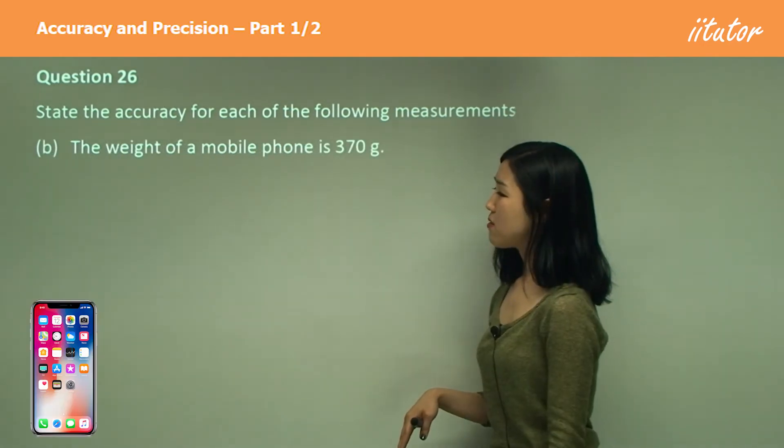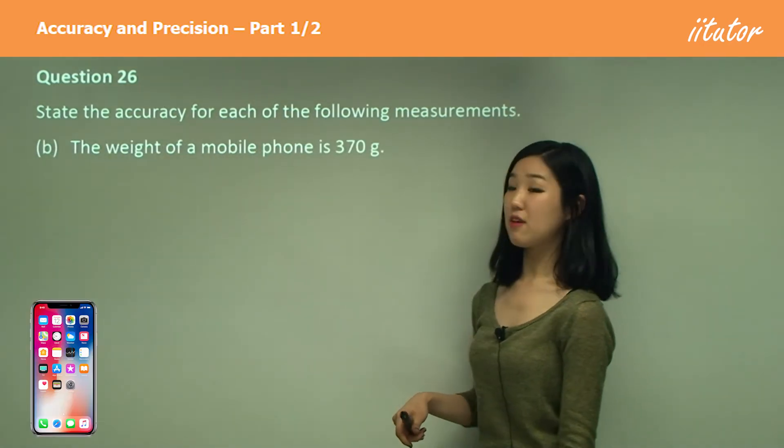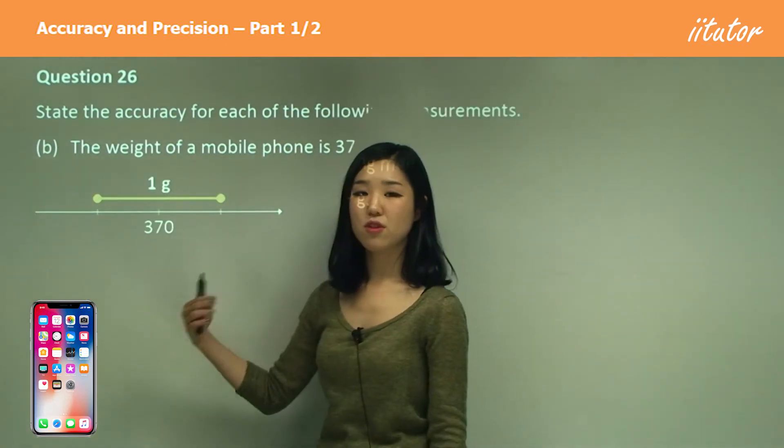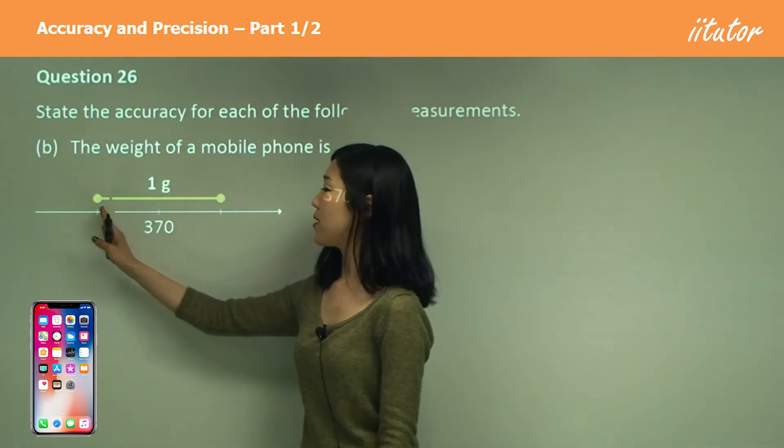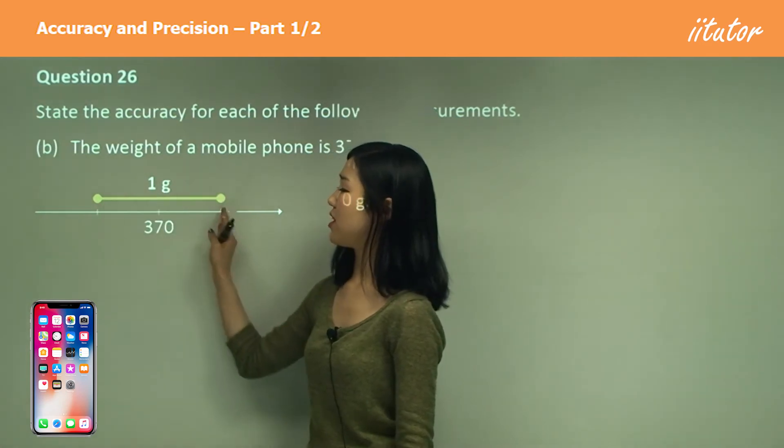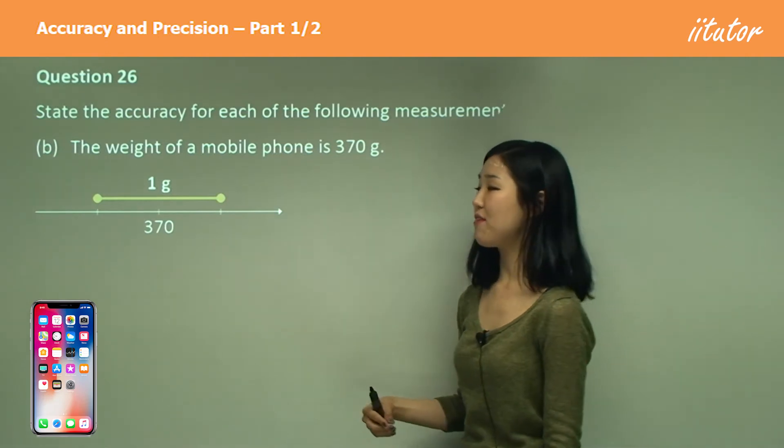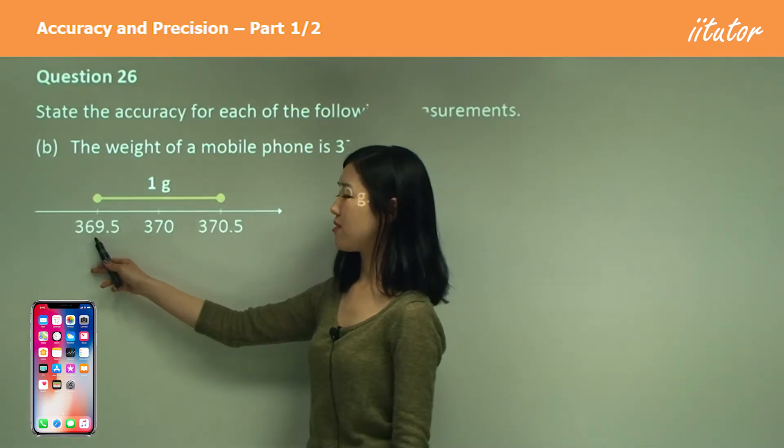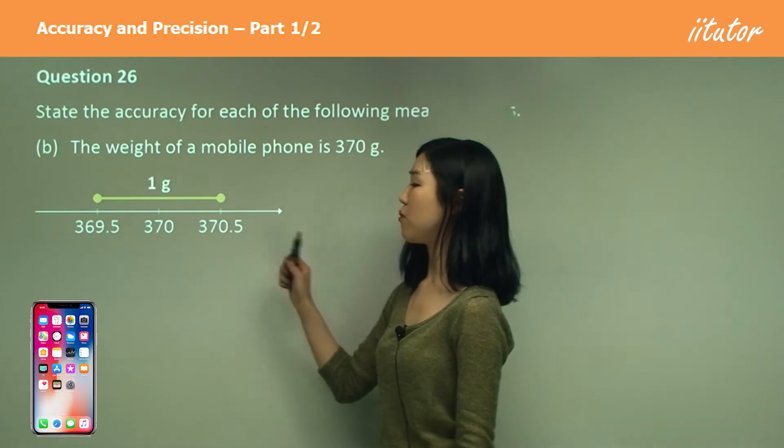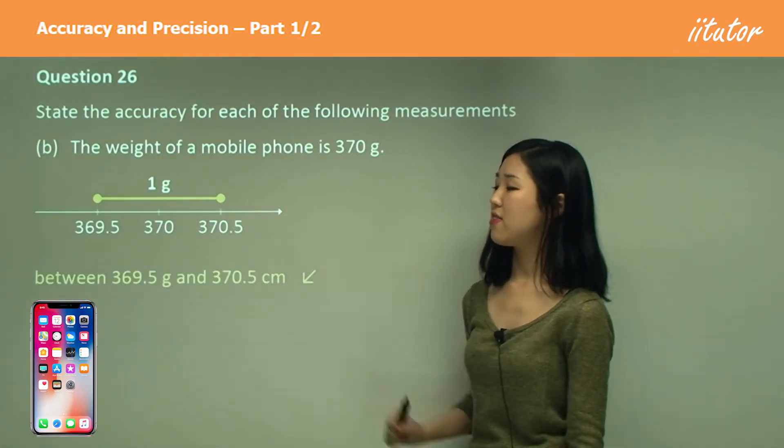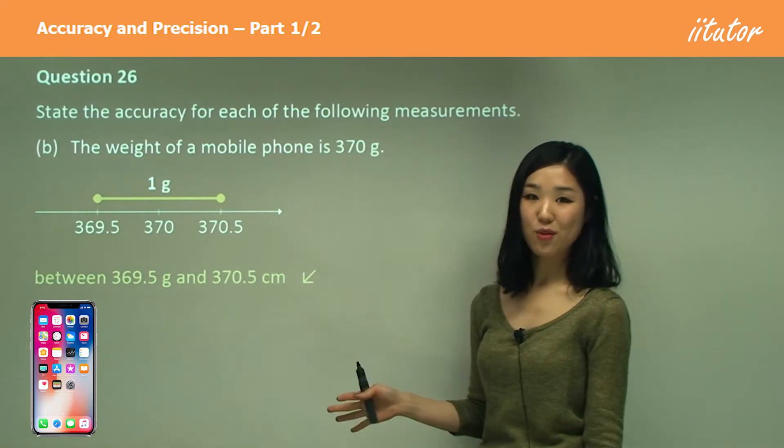Now B, the weight of a mobile phone is 370 grams. So again, 370 grams is to the nearest gram, isn't it? So I'm going to say from here to here, it's one gram. So what's half of one gram? 0.5 gram. So that will be 369.5 and that will be 370.5. So the accuracy will be between those two values. That's all you need to do.